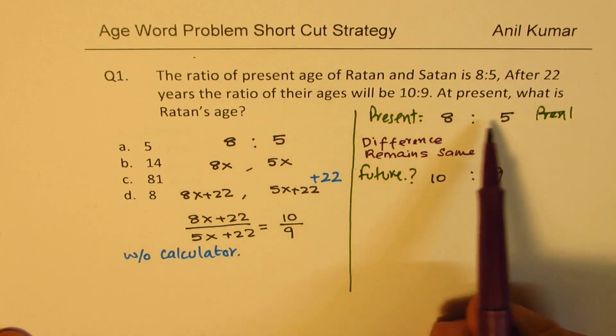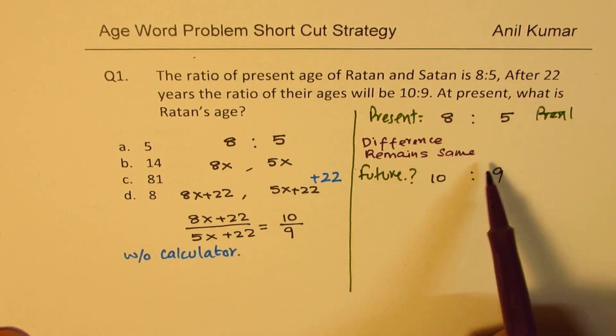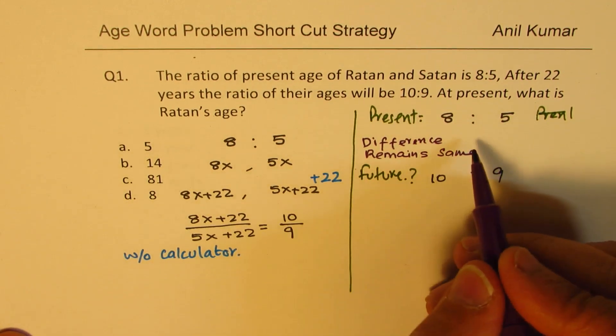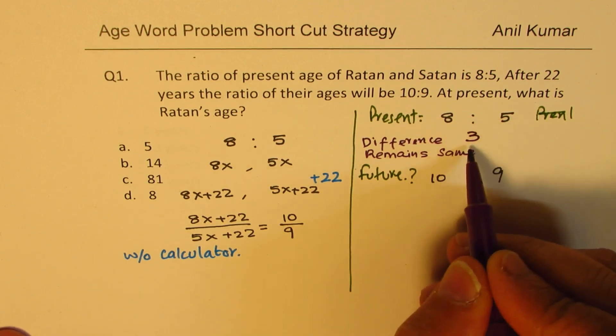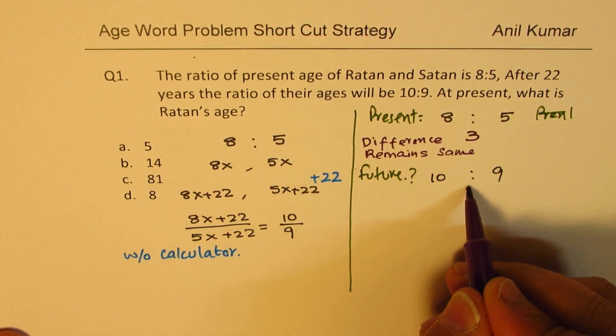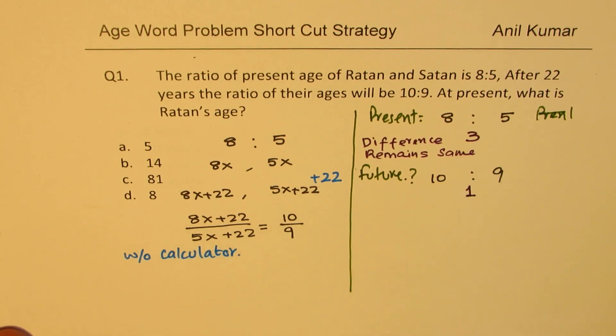If somebody is 3 years older than the other, even after 22 years, the same person will be having 3 years difference. So we are saying difference here is 3. In this case, 8 minus 5 is 3. However, the difference here is just 1. But the difference should be same. How do we get the same difference? That is the key to solve such questions.